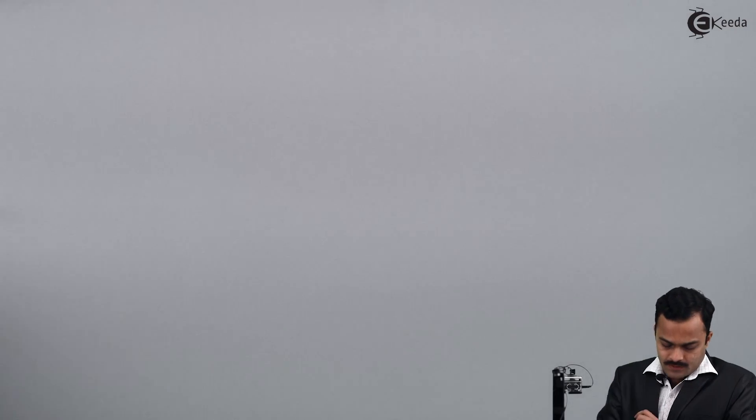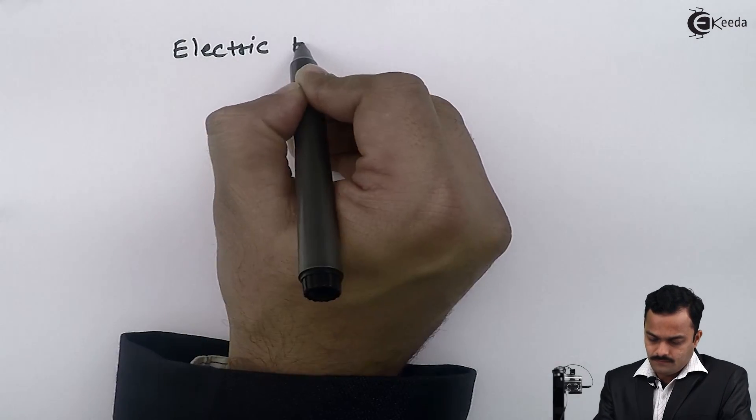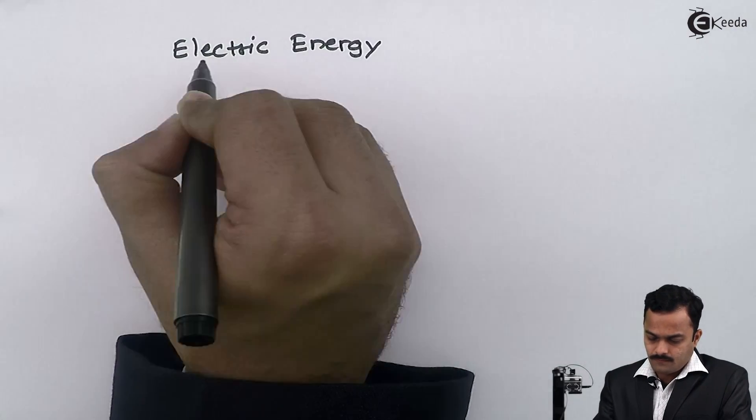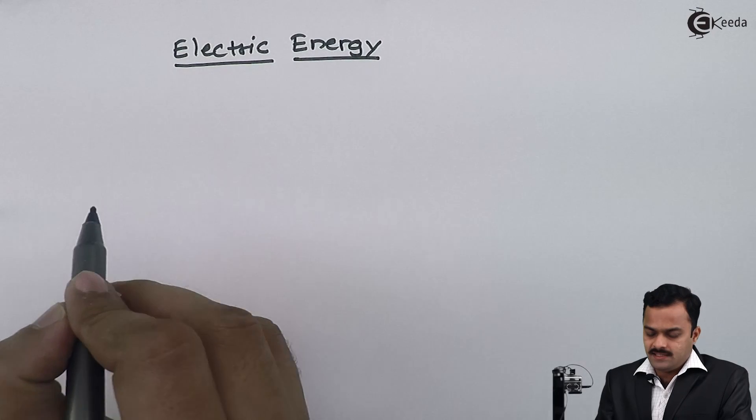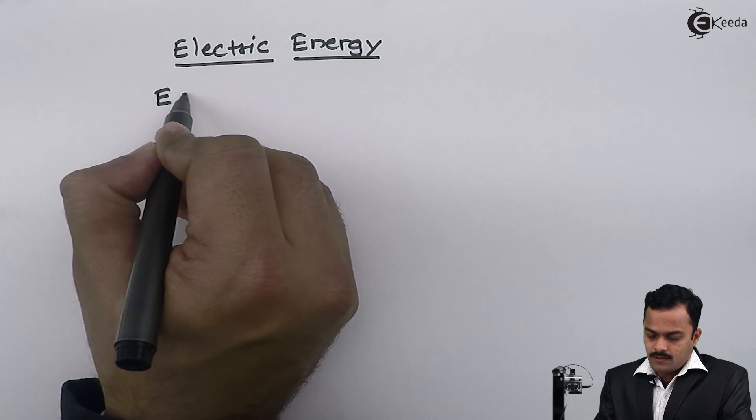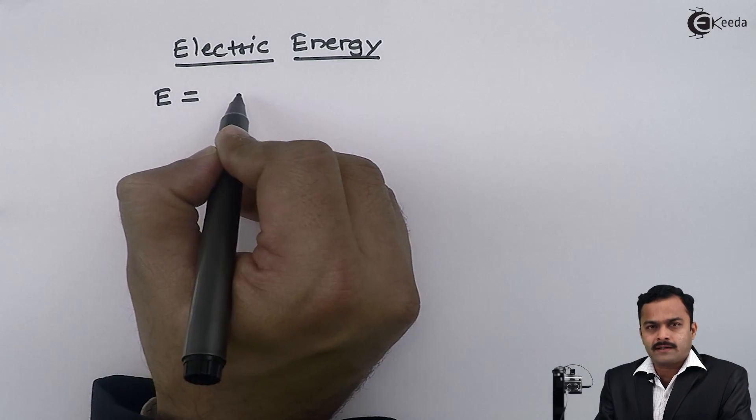Hi friends. In this video we are going to see the concept of electric energy and electric power, and how it is related to electrical parameters — that is voltage, current, and resistance. Electrical energy is nothing but electric work done.